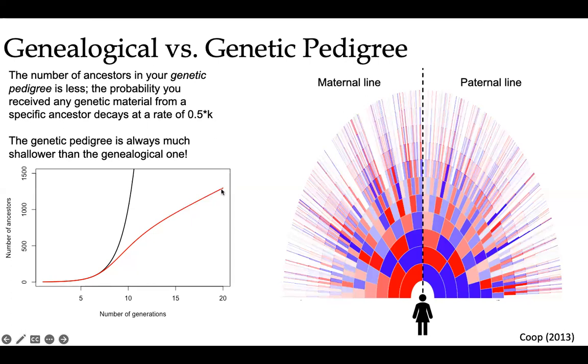What I've done here is plotted in black the number of pedigree ancestors out to 20 generations. The number of genealogical ancestors jumps up exponentially, whereas the number of genetic ancestors initially increases, but then it begins to deflate and flatten. This is important because it means the time to the most recent common ancestor, based on the genetic pedigree, is a different time than your genealogical common ancestor, which is the identical ancestor point.